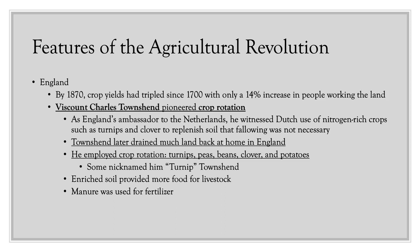Let's move on to England, where the biggest and most important changes in the agricultural revolution took place. By 1870 — jumping ahead for context — crop yields had tripled since 1700, but with only a 14% increase in people working the land. This is pretty remarkable, and we're going to explore how England achieved that.